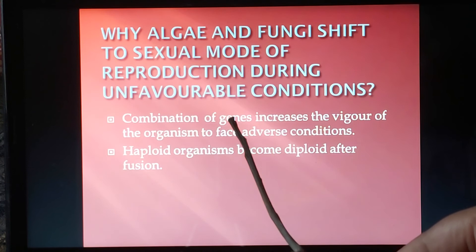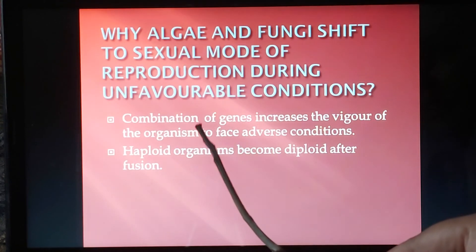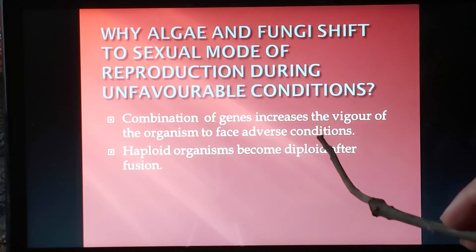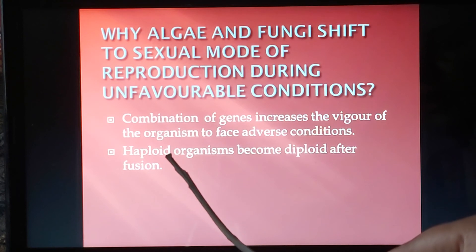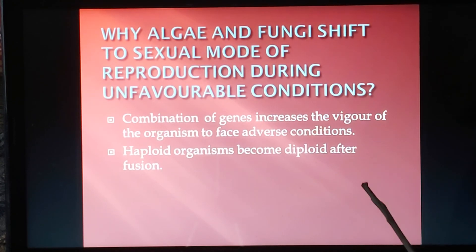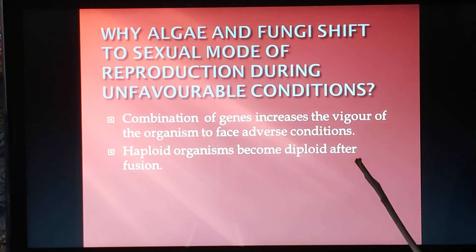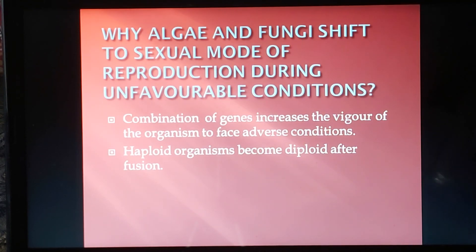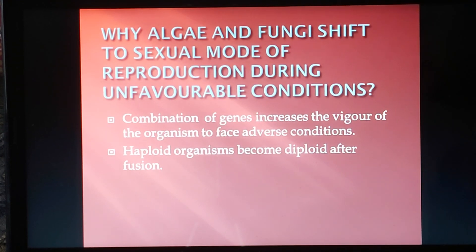The reason for this shift is that during sexual reproduction, gametes fuse and the combination of genes increases the vigor of the organism to face adverse conditions. Also, haploid organisms become diploid, and diploid organisms have more strength to overcome the unfavorable period. Variations arise which help them survive, and on return of favorable conditions, they give rise to new plant bodies. This concludes the video, and the next part will be in the next video.